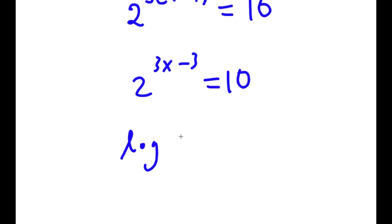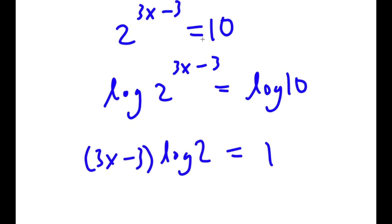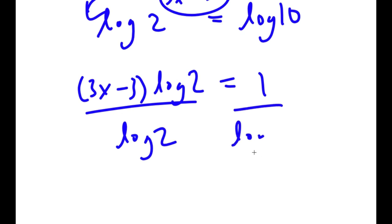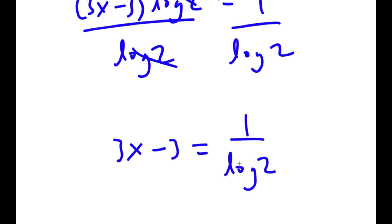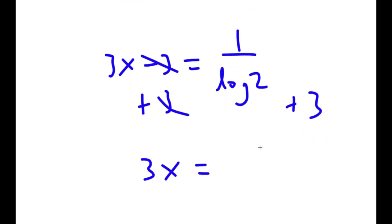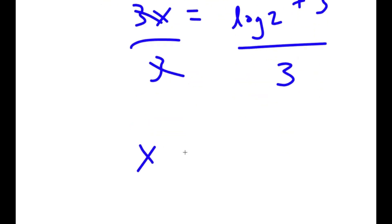Now I take the log of both sides. I get log of 2^(3x minus 3) equals log 10, and log 10 equals 1. Moving the exponent to the front gives (3x minus 3) times log 2 equals 1. Dividing both sides by log 2 gives 3x minus 3 equals 1 over log 2. Adding 3 to both sides and then dividing by 3 gives x equals 1 over (3 log 2) plus 1.